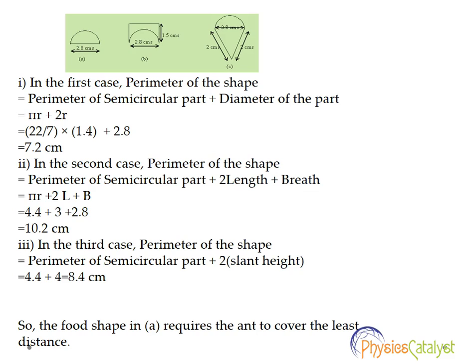Now let's take a look at the third part. The perimeter of the third shape consists of the perimeter of the semicircular part plus two slant heights. So substituting those values, 4.4 + 4 equals 8.4 centimeters.